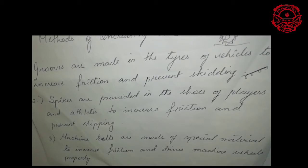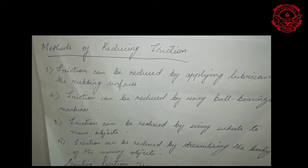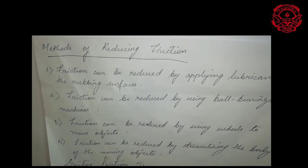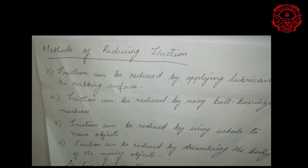We have already discussed the methods of increasing friction. Now let's move on to the methods of reducing friction. In some cases, friction is very harmful to us, so sometimes we want to reduce it. Friction can be reduced by the following methods. The first method is that friction can be reduced by applying lubricants to the rubbing surface. Lubricants are oil or grease applied to a machine — this process is called lubrication. The friction between the moving parts of a machine can be reduced when you apply a lubricant like oil or grease. Their rubbing surface becomes smooth and the friction between them is reduced.